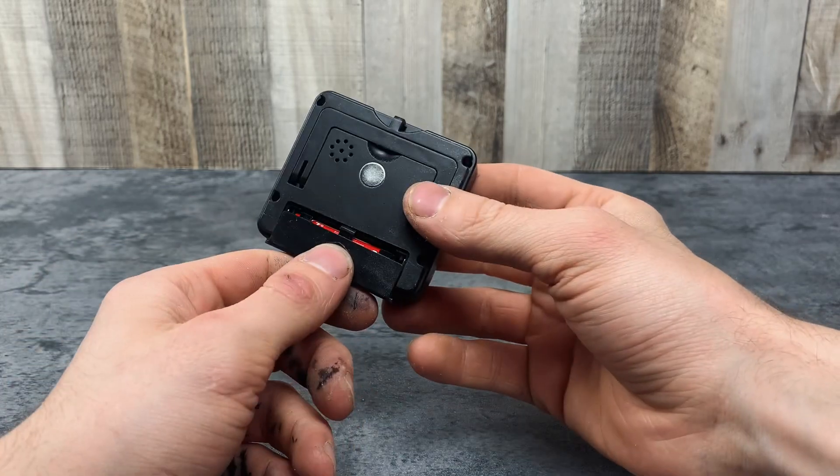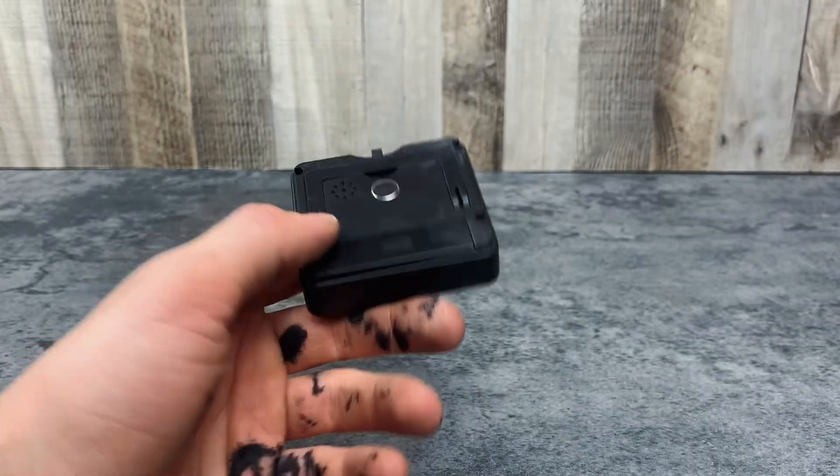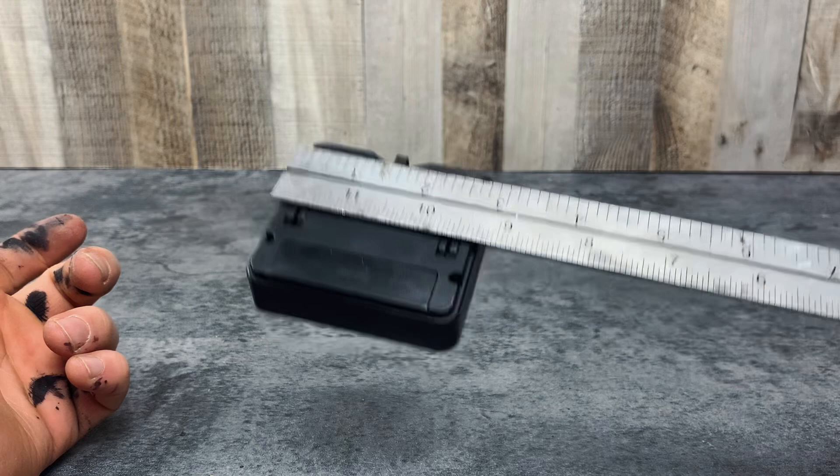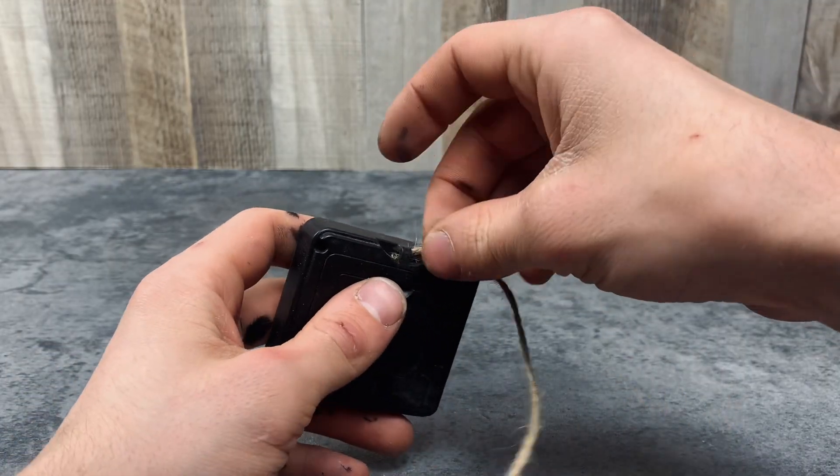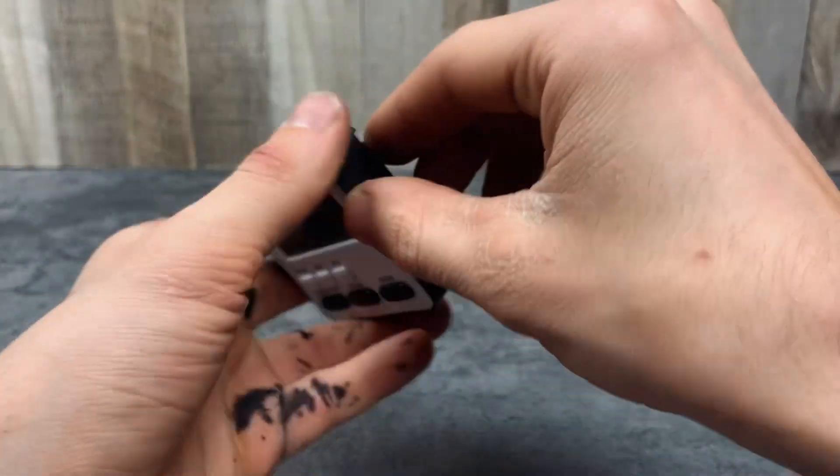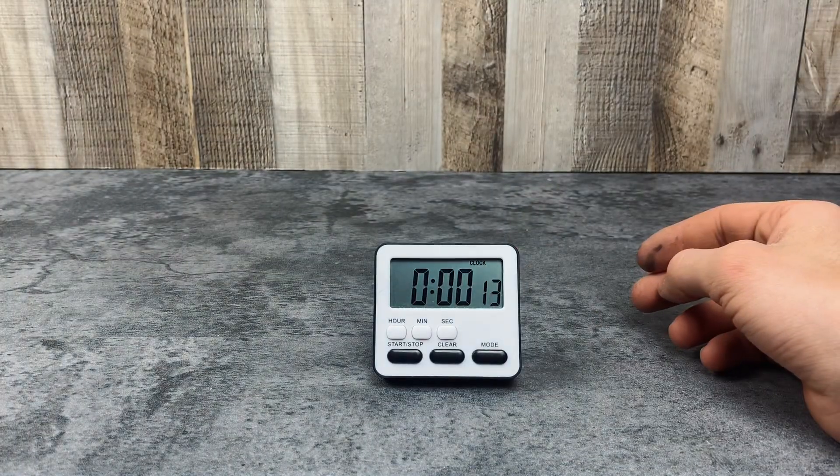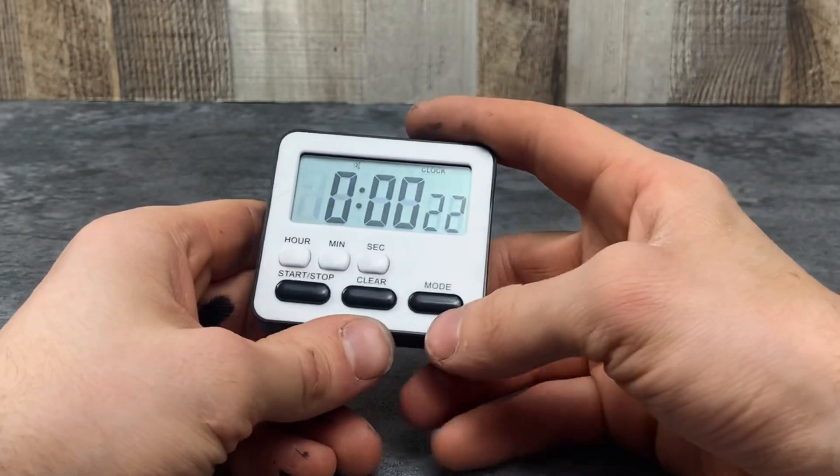Taking a look at the back, a battery is included and it has this magnet for sticking it to a fridge. As you can see, it's one of those strong magnets. The timer also has this spot for a string and then this fold-out stand, which is super helpful when setting this on a table. Anyway, this thing has a bunch of cool features.